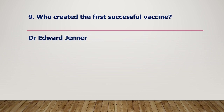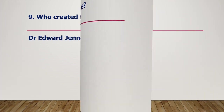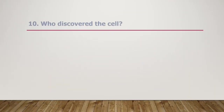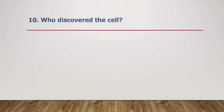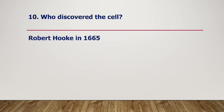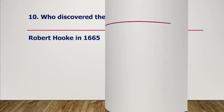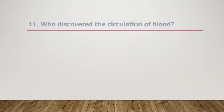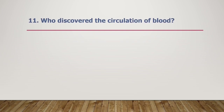Who created the first successful vaccine? Dr. Edward Jenner. Who discovered the cell? Robert Hooke, 1665.